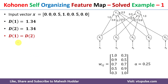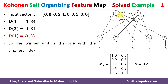Because the Euclidean distances are equal, in Kohonen self-organizing map we select the cluster with the lowest index as the winning cluster. If D(1) < D(2), Y1 would be selected; if D(2) < D(1), Y2 would be selected. Since D(1) equals D(2), we pick the lowest index, so Y1 is declared the winner and j becomes 1.